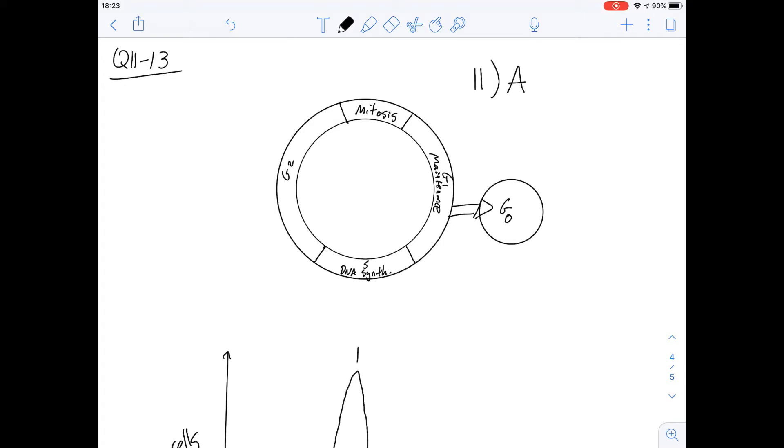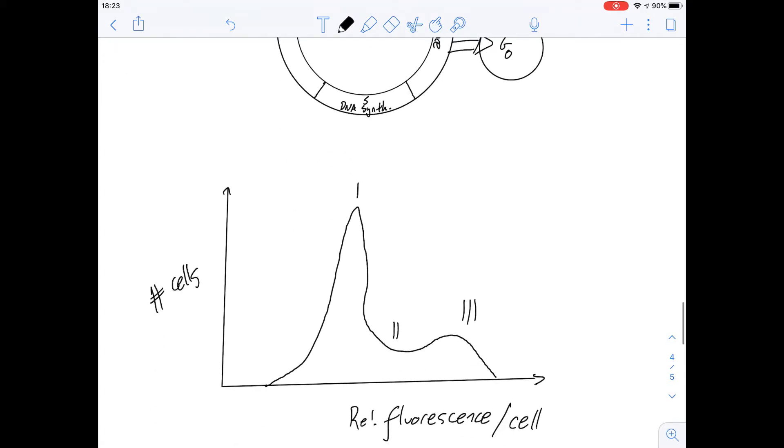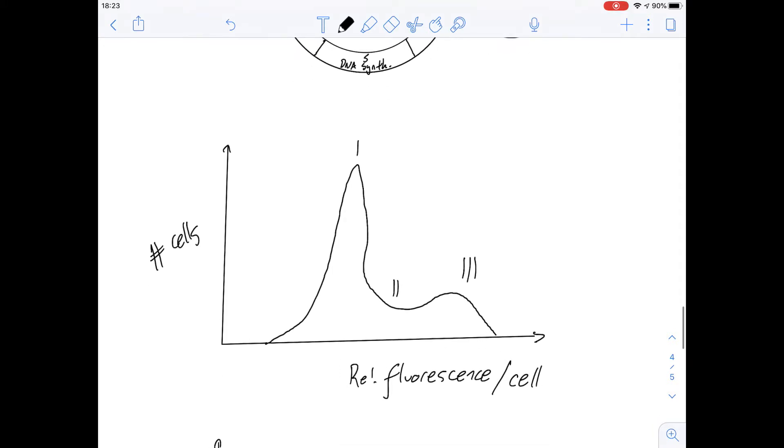Okay so questions 12 and 13 we're given some additional information. I've drawn out the graph here. We're told that they can put a fluorescent dye on DNA and so the more fluorescence you have the more DNA is present in that cell. This is a technique called flow cytometry and we're given this graph that shows number of cells on the y-axis and the relative fluorescence per cell. Another way you can think of this relative fluorescence is really just the amount of DNA.